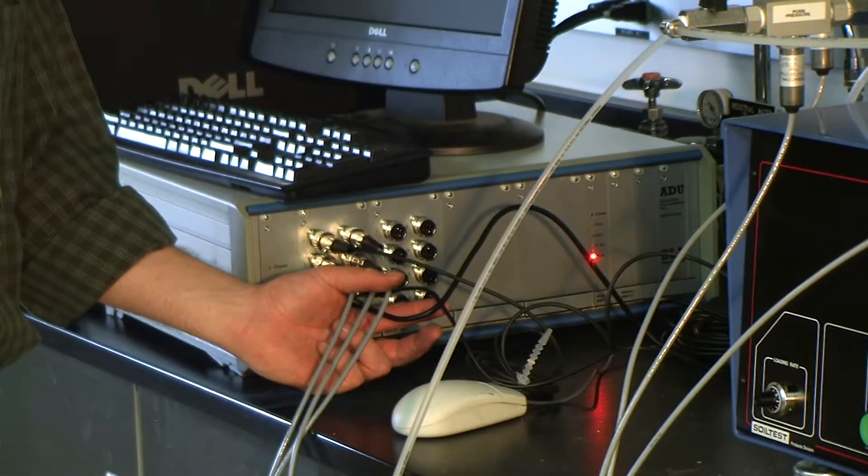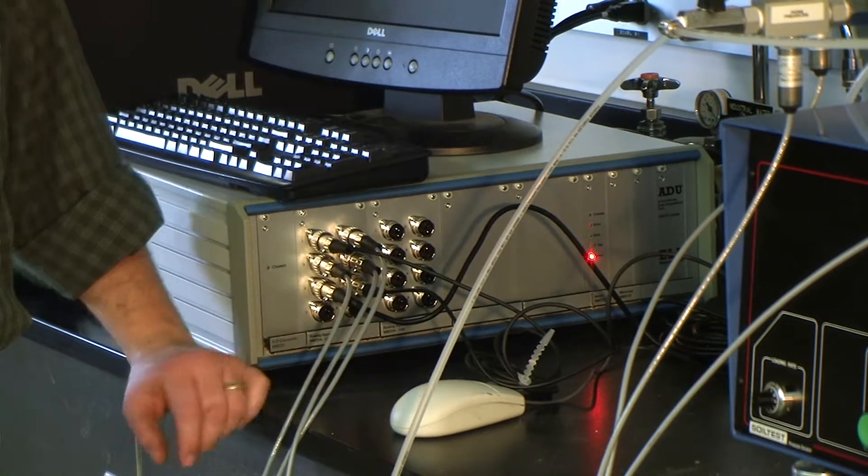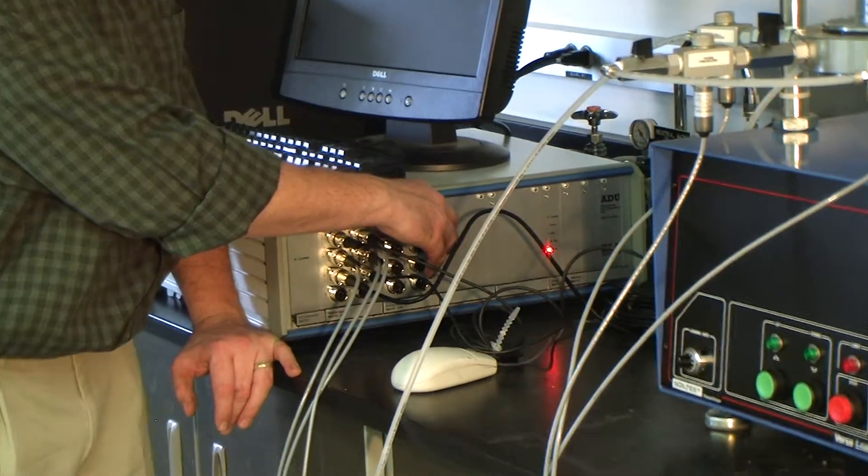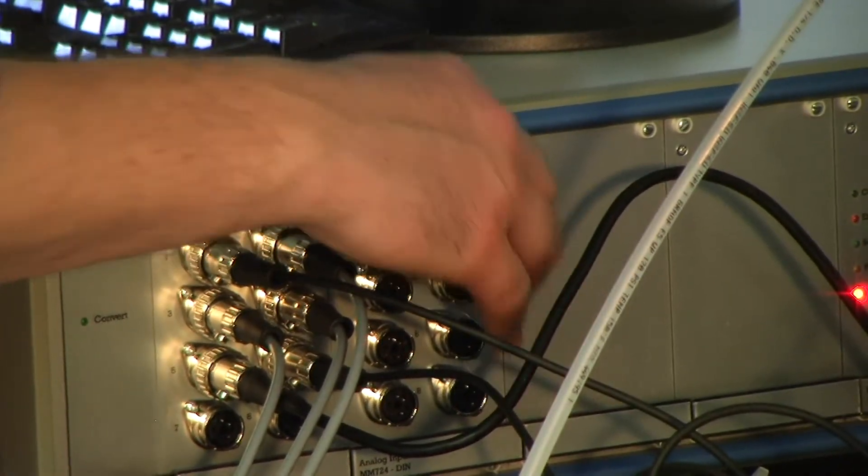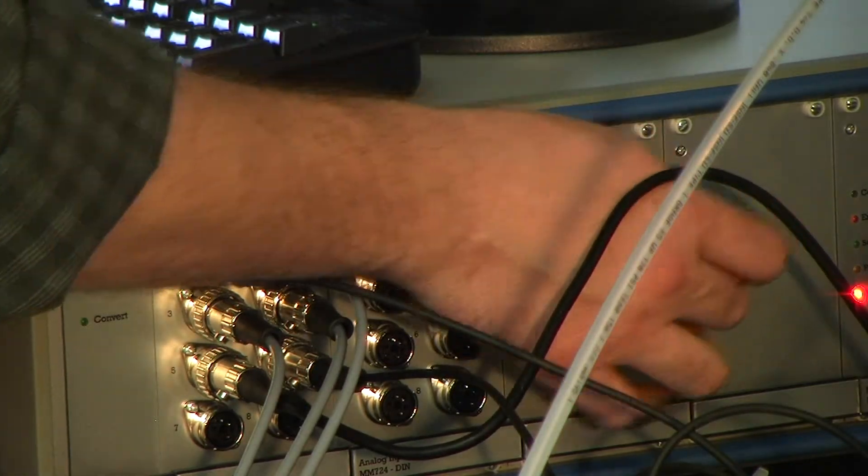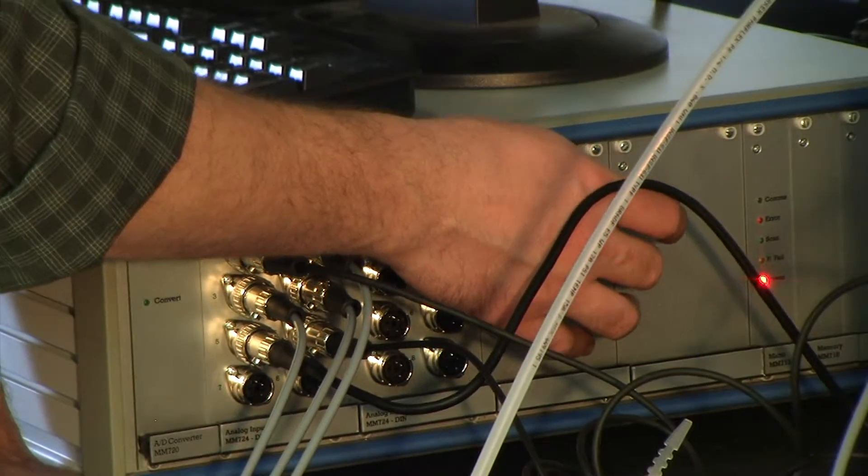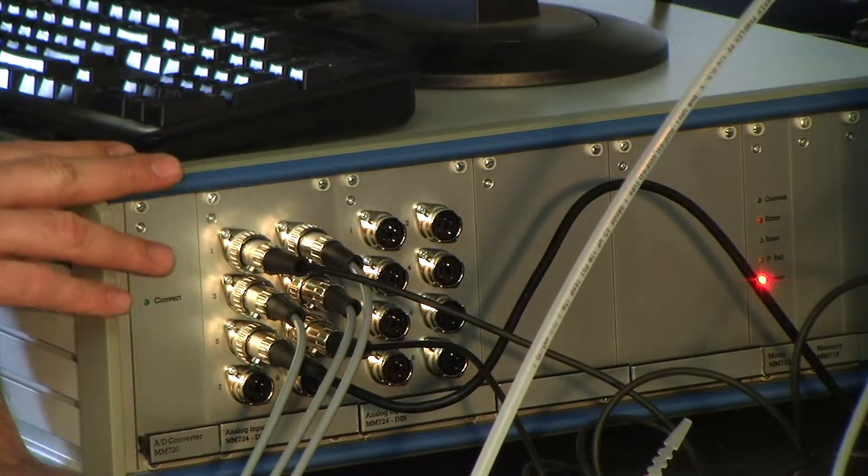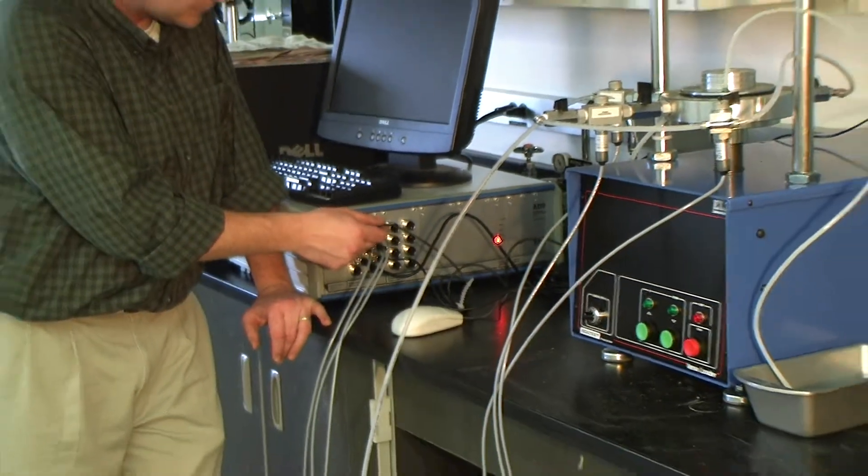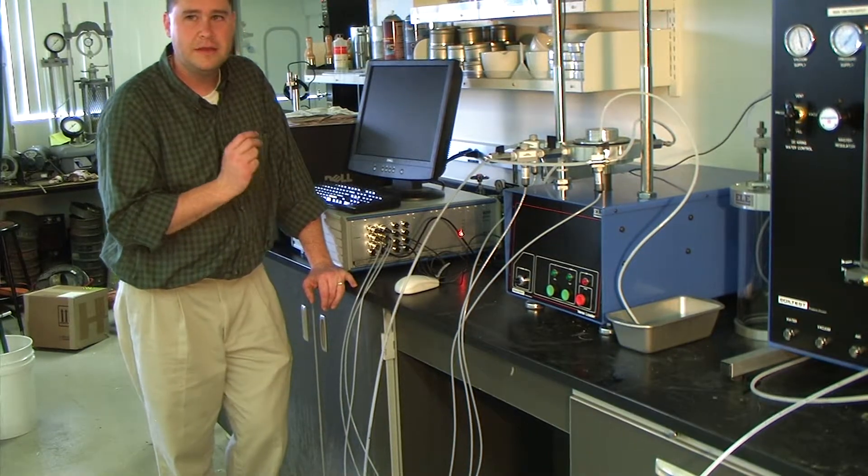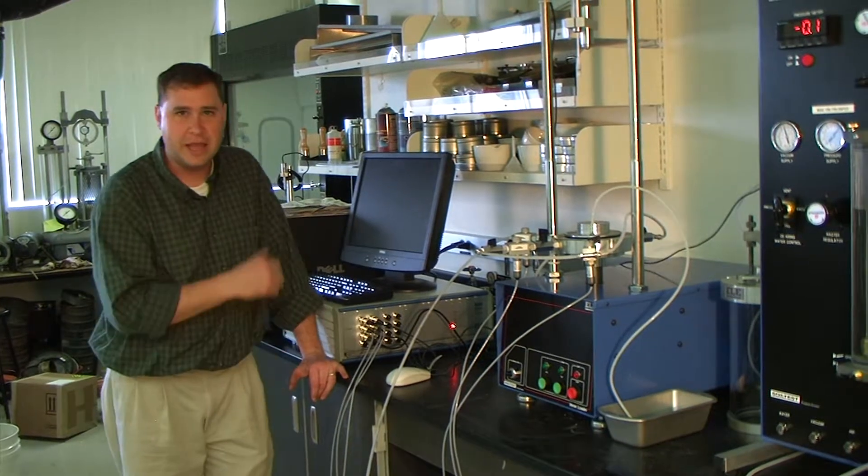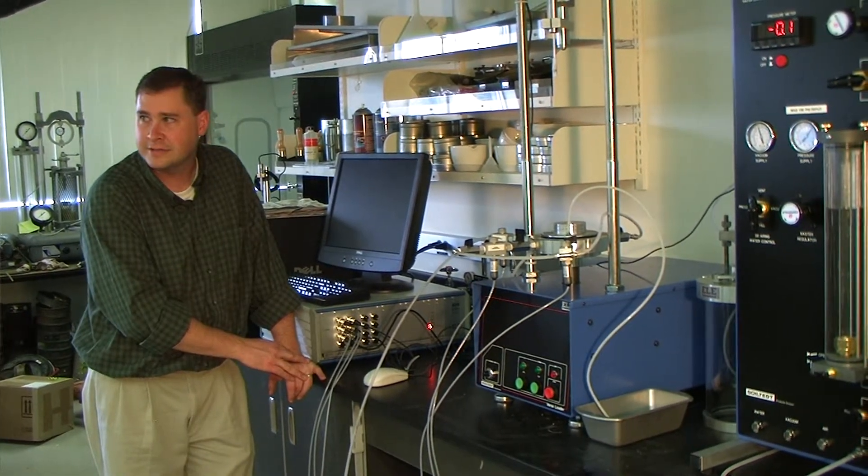And it does that with a number of different transducers. This particular unit was purchased with an additional eight channel expansion card, or module. So this has 16 channels in it right now. And every ADU has the opportunity to have up to four eight channel inputs, which means you can have up to 32 channels for each ADU. And each channel can be monitored individually and simultaneously, no matter how many transducers you have connected into it.